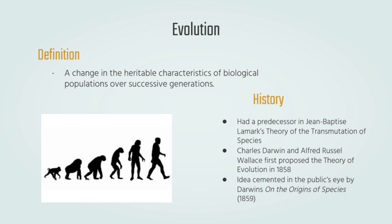The idea of evolution first began with Jean-Baptiste Lamarck in the 19th century, with his theory of the transmutation of species and theory of inheritance of acquired characteristics. He argued that the reason we saw changes in the appearances of species over time was because organisms could pass down physical traits that they acquired through overuse to their offspring. However, Charles Darwin disproved this theory with his publication of the Origin of Species by Means of Natural Selection in 1859.